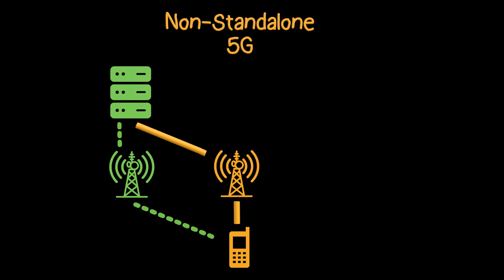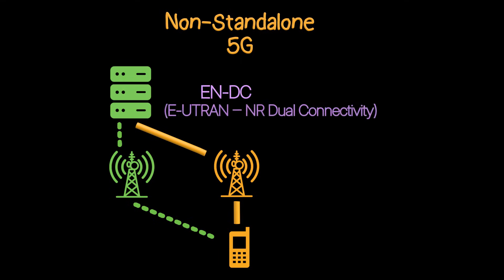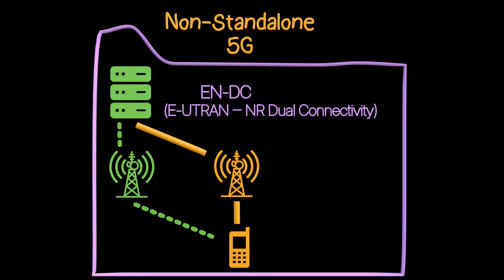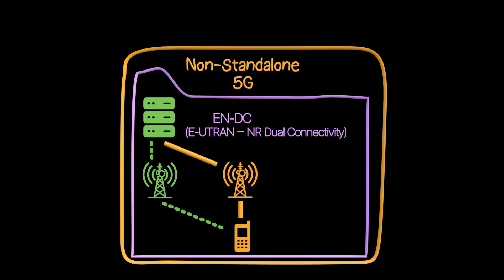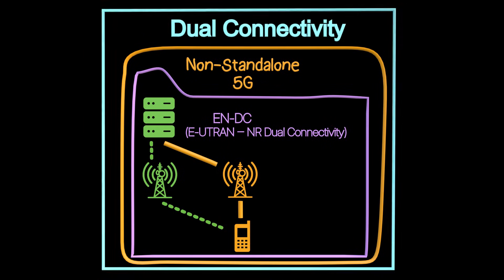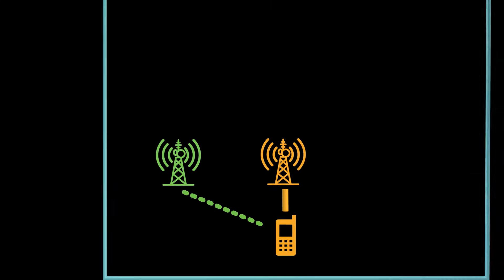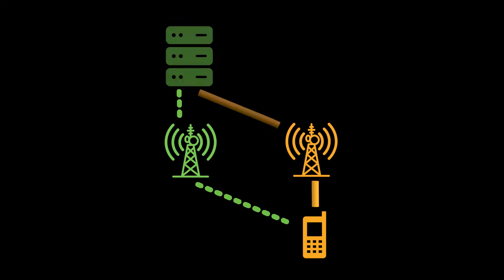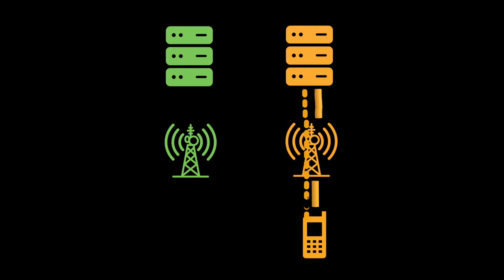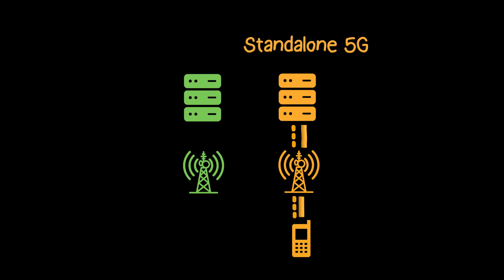This widely adopted deployment is called ENDC. In other words, ENDC is a specific deployment of non-standalone, and non-standalone is a special case of dual connectivity. Dual connectivity simply means one UE connects to two base stations at the same time. Later, as traffic increased, operators introduced the 5G core and connected it to the 5G base station. This is called standalone 5G. Now your phone uses 5G for both control and data, without involving 4G.